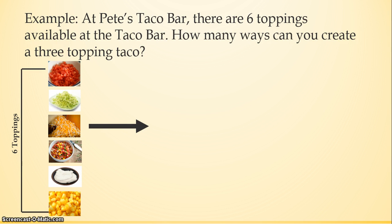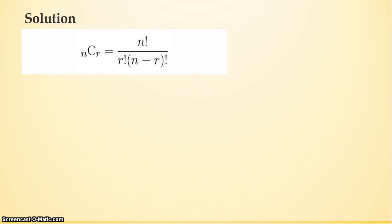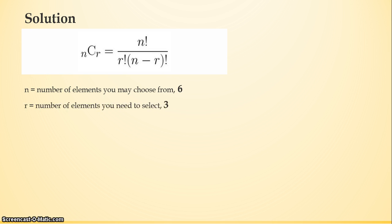Here's a visual representation of the situation: six toppings, you can only choose three. How many unique three-topping tacos can you make? Because order doesn't matter, we use the combination formula, which is n factorial divided by r factorial times (n minus r) factorial. If you don't know what a factorial is, it's when you take a number and multiply it by all the numbers that come before it. So 3 factorial is 3 × 2 × 1, and 6 factorial is 6 × 5 × 4 × 3 × 2 × 1. N is 6 (the six possible toppings to choose from), and R is 3 (the number of toppings you have to select).